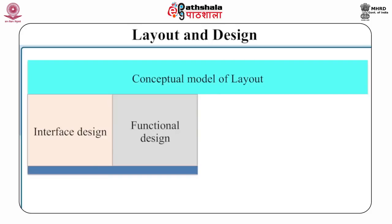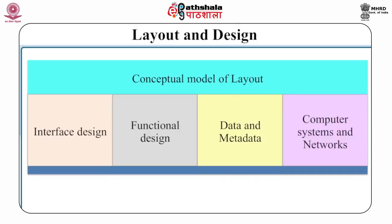ARMS has given a conceptual model of interface design that consists of four components: interface design, functional design, data and metadata, and computer systems and networks. The conceptual model emphasizes that interface design encompasses what appears on the screen and how the user manipulates it. Its aspects include fonts, colors, logos, keyboard controls, menus and buttons. Functionally, the design specifies functions offered to the user, such as selecting parts of a digital object, searching a list, or sorting results.